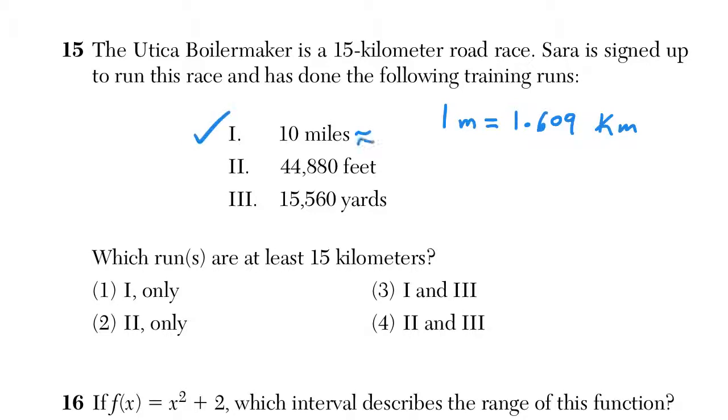Choice one is very clear. You could even do it without a calculator: 10 miles. If we know 1 mile is 1.6, multiply it by 10, move the decimal over, it's going to be 16.09. Obviously that's at least 15 kilometers. Key words: at least. Obviously none of these are going to be exact.